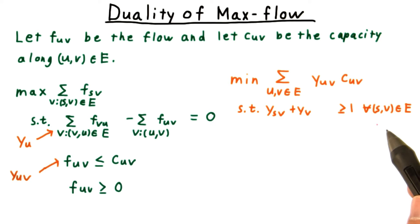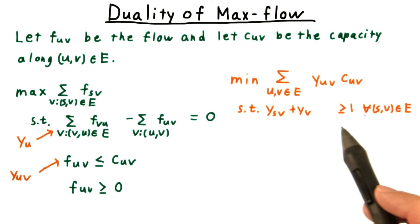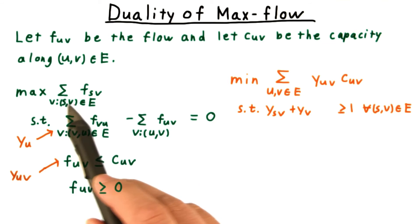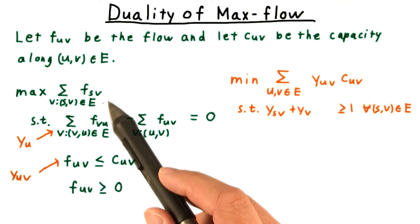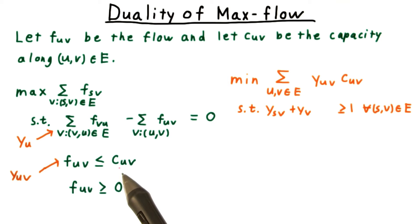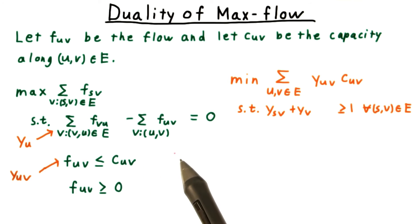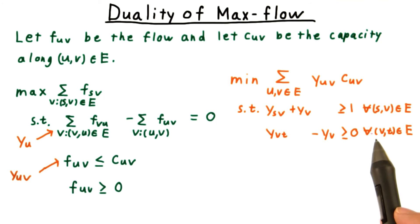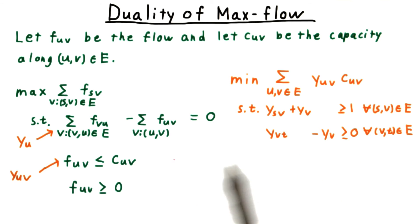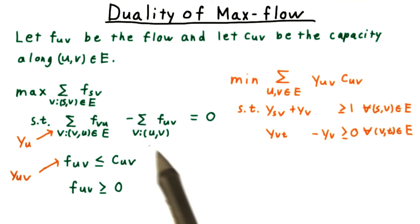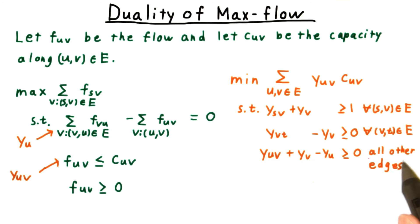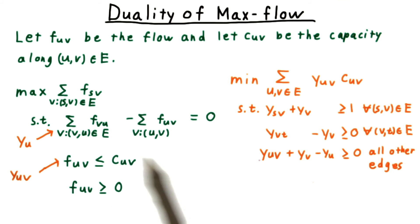The constraints for the dual involve several cases. We'll consider first those arising from the objective function coefficients for edges out of the source being one. These flows appear once in the capacity constraints and once for the receiving vertex for the flow in their conservation equation. The case for edges going into the sink is analogous — the flow is present in the capacity constraints and in the conservation of flow constraint for the sending vertex. For all other edges, the flow appears in the capacity constraint and in the conservation equations for both the sending and the receiving vertex.